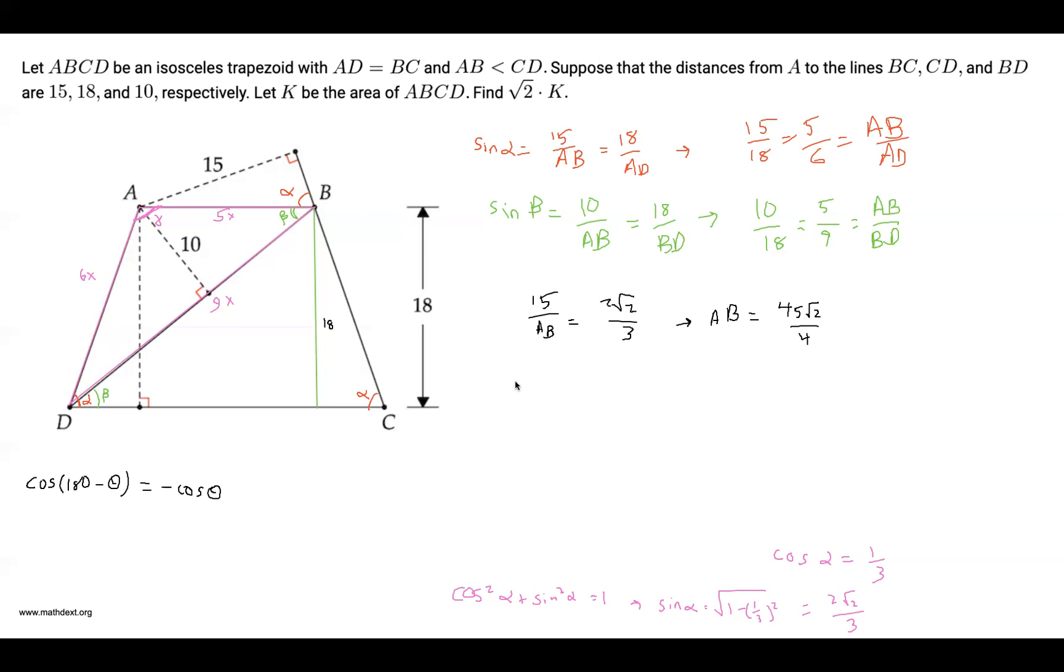Now what we can do is tangent of alpha is sine of alpha over cosine of alpha equals 2 root 2 over 3 over 1 third, which is 2 root 2. But taking a look at this triangle over here, we see that tangent of alpha is opposite over adjacent. Remember SOHCAHTOA. So this would be equal to, if we call this point